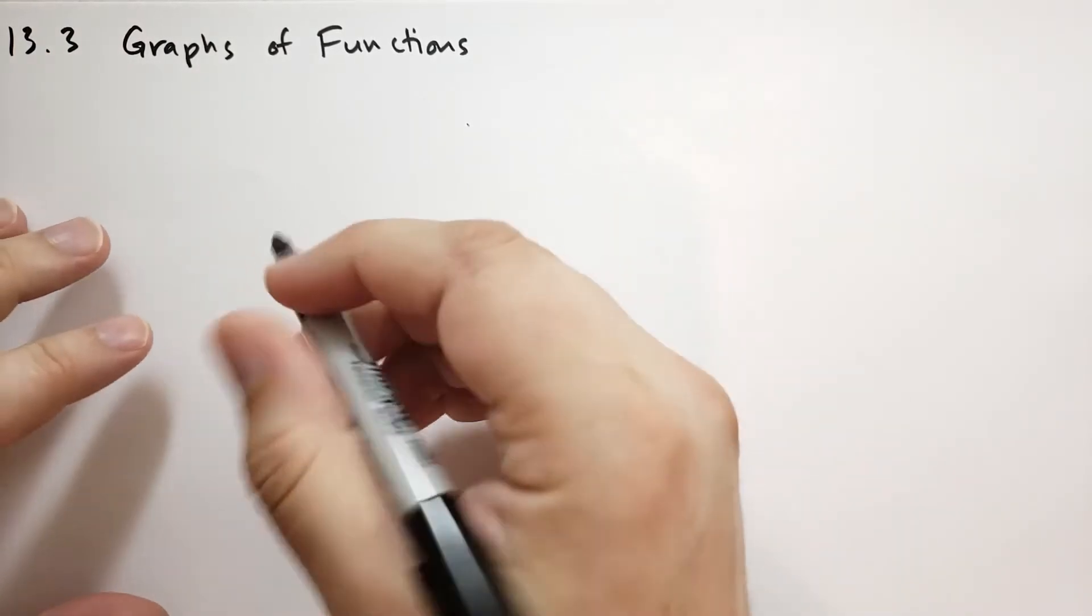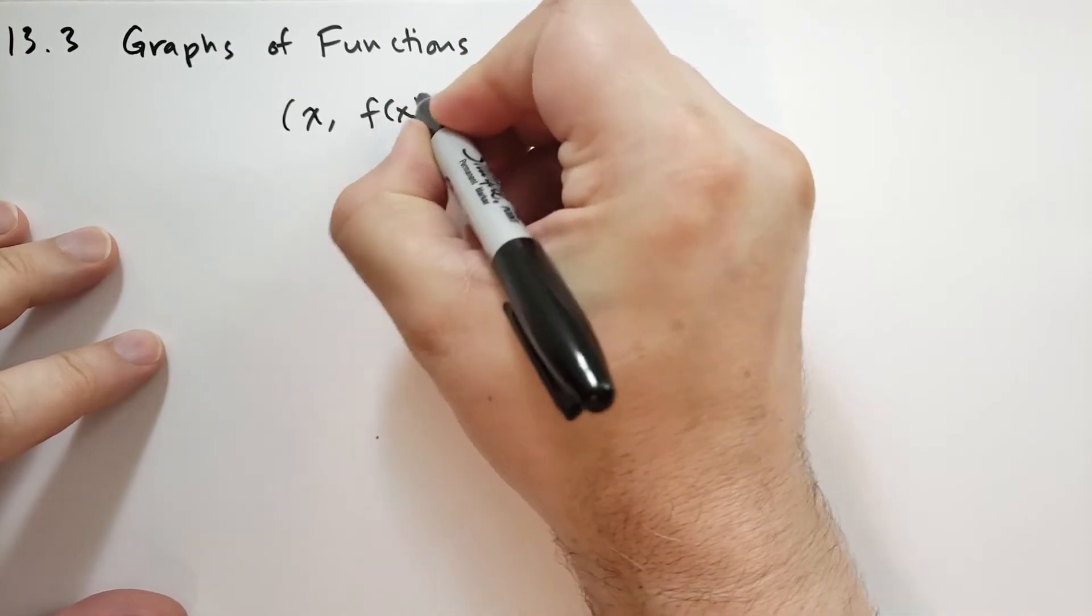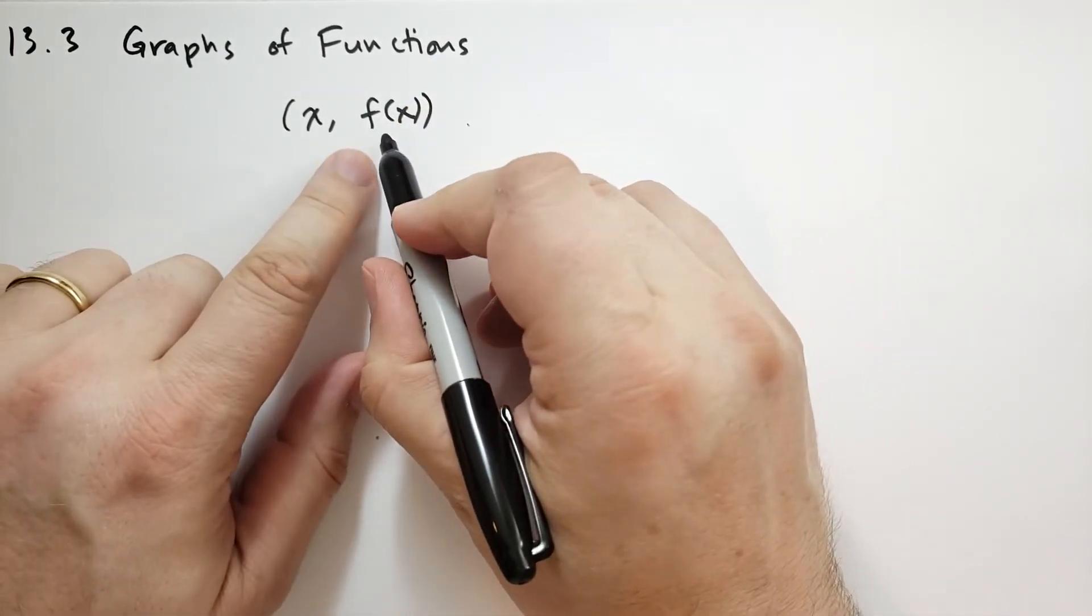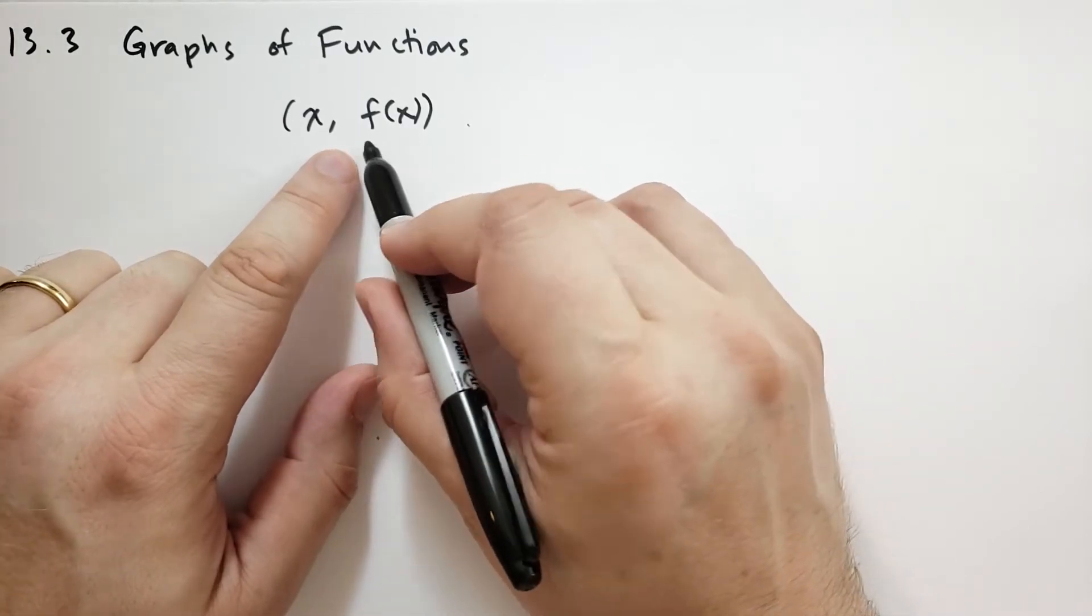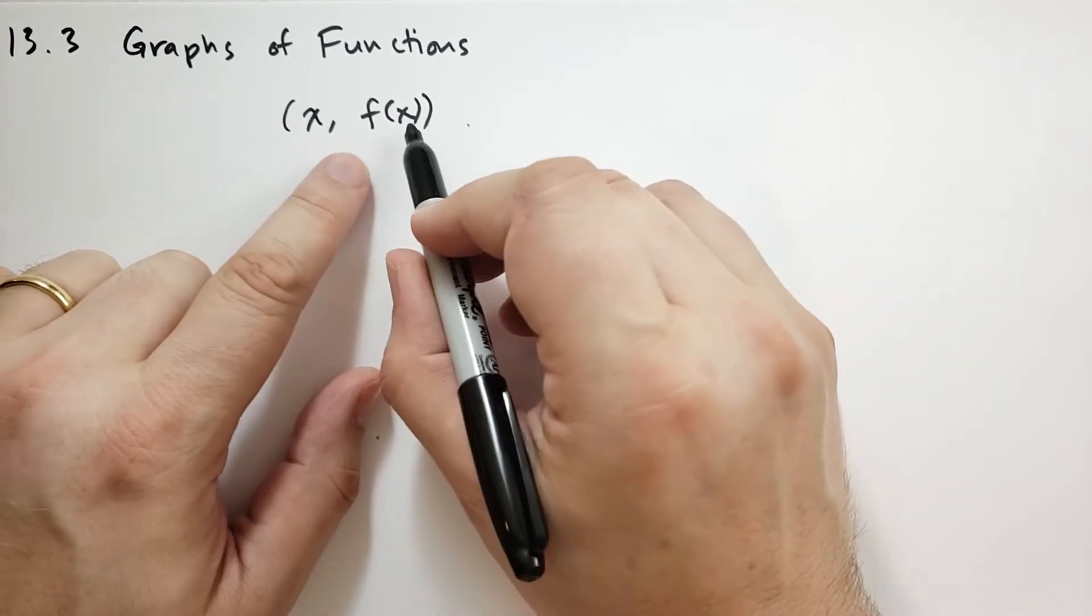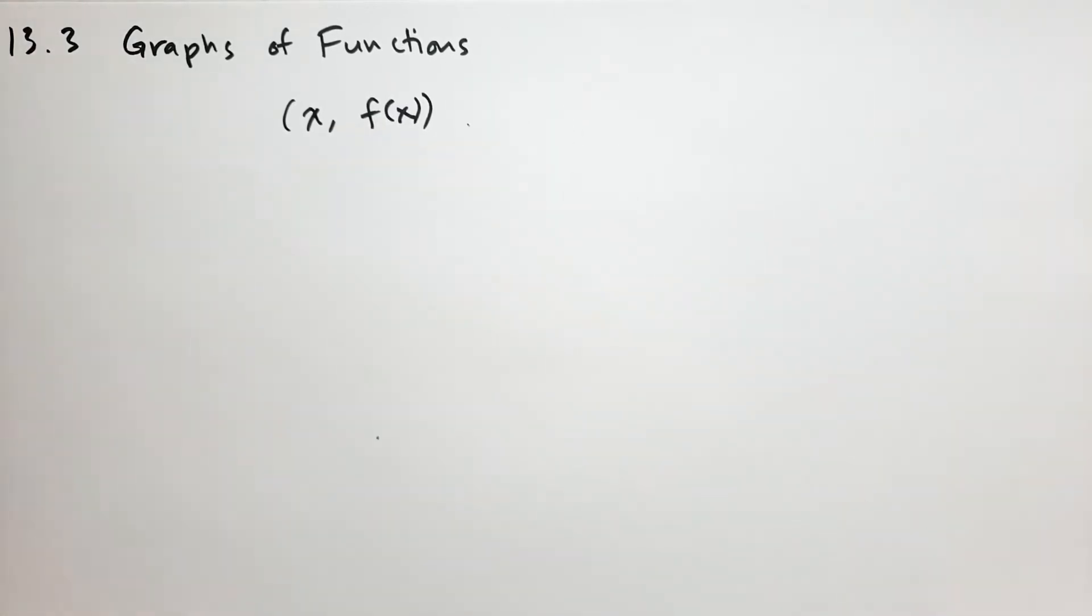And by graph of a function, we mean the set of all points (x, f(x)), or the image of x through f. So we have some function that maps numbers to other numbers, and this is how we draw a graph.